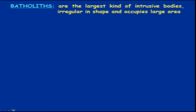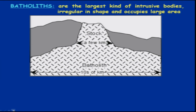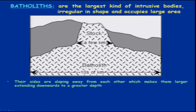Batholiths are irregular in shape and occupy very large areas compared to other forms we have discussed, like dykes, sills, and all that. If you look at the batholith, it will cover almost tens of kilometers at the basal part, and the top area going towards the surface is termed as stock. That will cover an area of a few hundred kilometers, and batholiths cover a larger region compared to other igneous intrusive bodies.